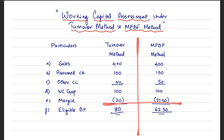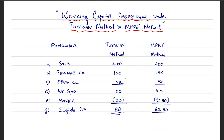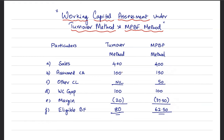Now you can compare and contrast. For the same level of sales and the same level of working capital gap, look at the eligible bank finance — 80 under Turnover Method versus 62.5 under MPBF. There are two reasons for this difference: one, factoring of other current liabilities; two, differences in margin. In my opinion, the MPBF Method is more scientific and accurate because it sees the estimated build-up of current assets — not an assumed build-up — it considers how much can be funded by others, and it insists on a 25% margin from the borrower, with only the balance being funded. Whereas the Turnover Method is blind about other current liabilities, insists only on minimal margin, and gives excess finance to the borrower.